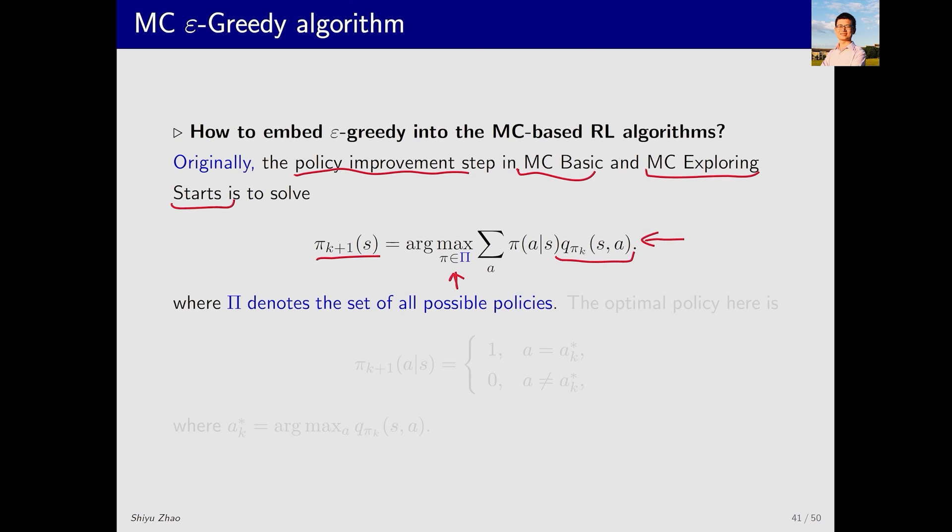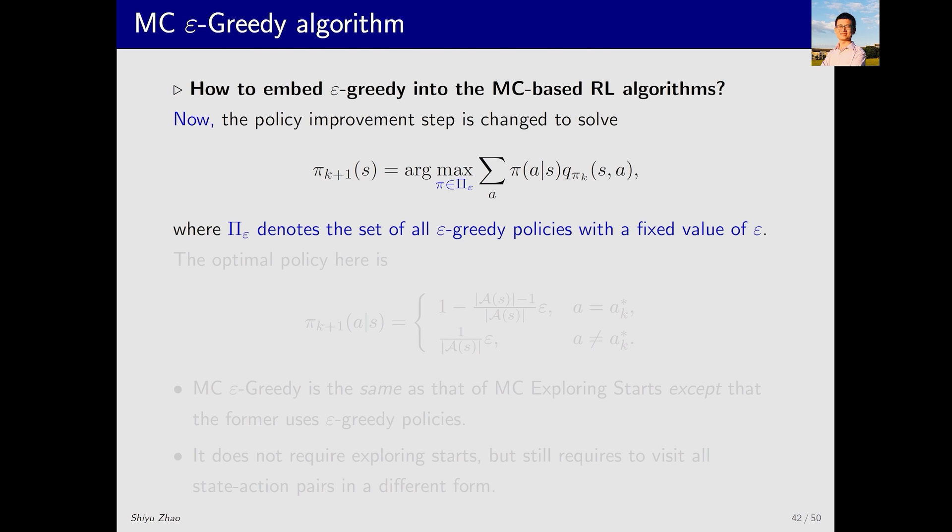Although not explicitly emphasized before, when solving this optimization problem, π should be chosen from all possible policies denoted by Π. So what's the optimal policy obtained? It's the greedy policy. Now, embedding epsilon greedy into the MC-based RL algorithms is straightforward.